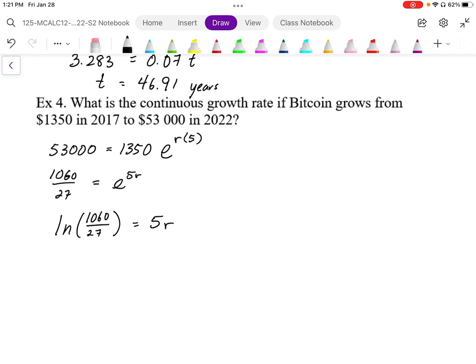So plugging this into my calculator, log of that number is going to give me about 3.670. That's equal to 5 times my rate. So the rate of growth of Bitcoin, the continuous rate of growth, I divide that by 5.